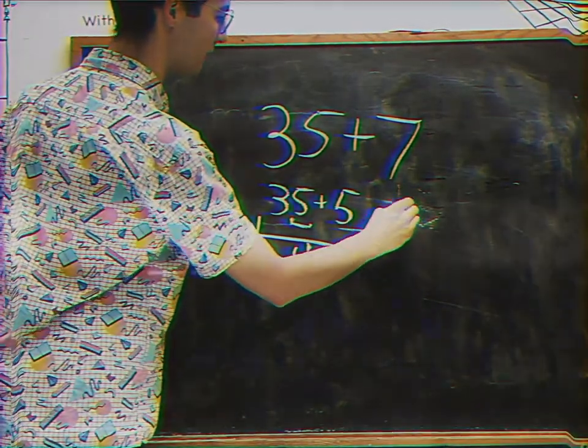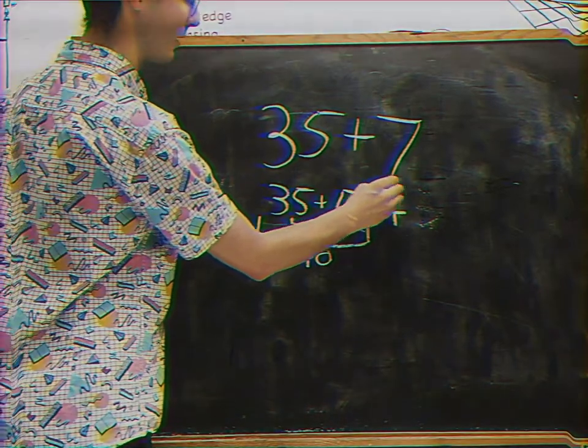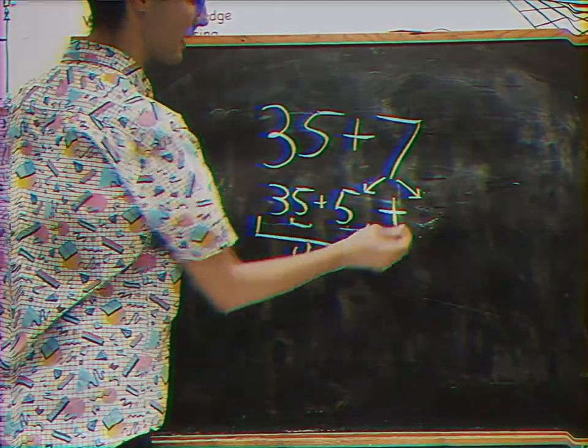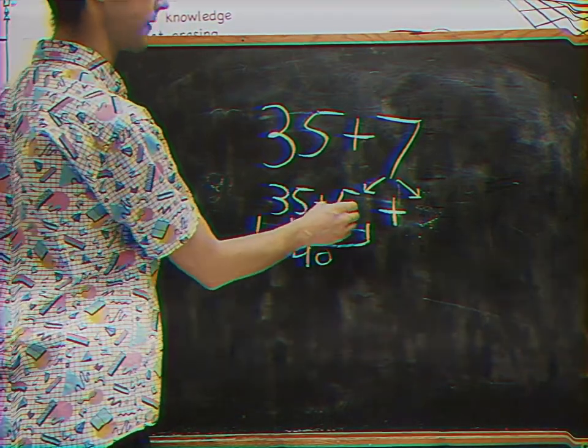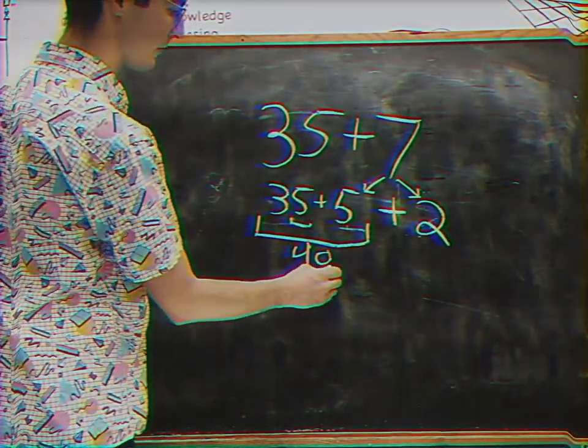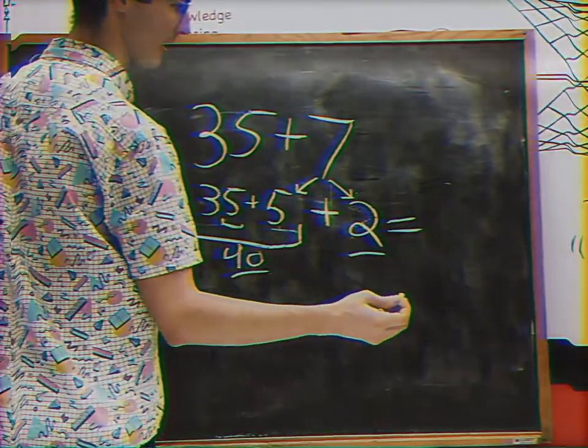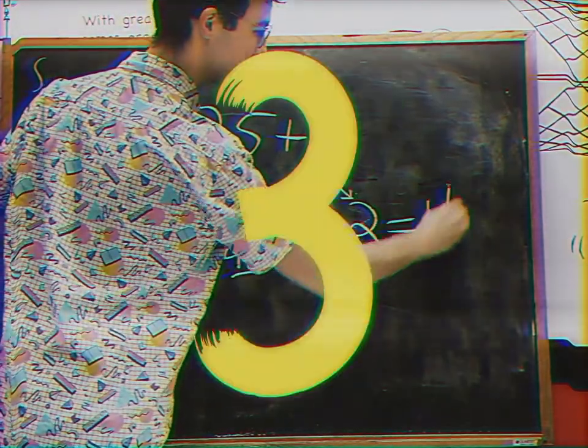So the last part is we're going to do the same thing we did last time. We're going to break up that other number. And then 5 and what will make 7? Yeah, that's right. 5 is 2 away from 7. And then at this point, we've got the same two parts. We've got 40 and we've got 2. So that's 42.